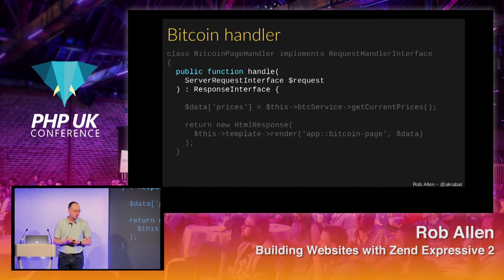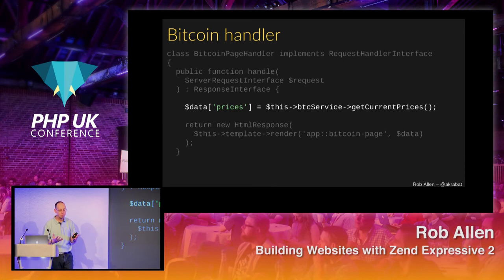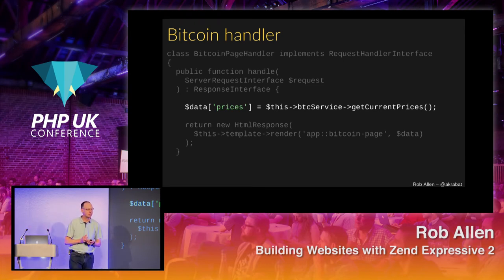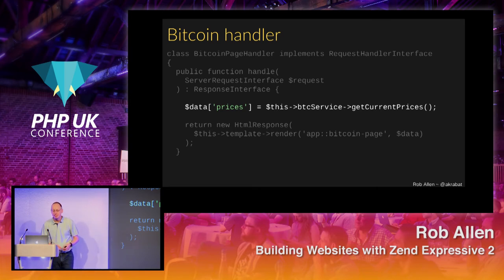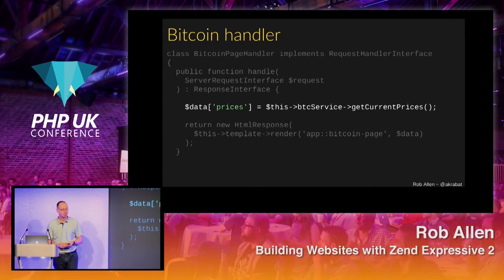There's our handle method — PSR-15's handler interface. All the actual work related to this particular web page is done in a service class — the BitcoinService, which magically gets current prices. The nice thing about this: I don't have to show you the code for that, so you can assume it works. It's in the model — someone else's problem. We then return an HTML response, using a Twig template referenced by app::bitcoin-page, which renders our data visible to users.